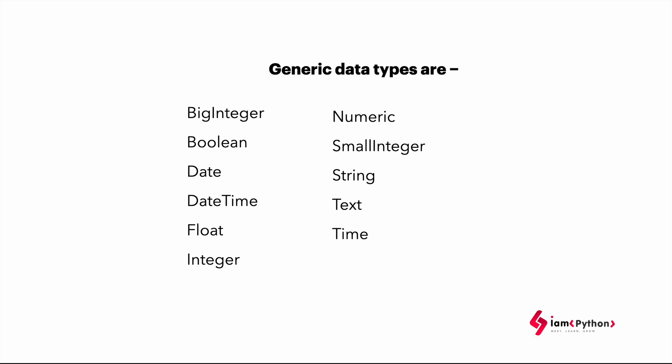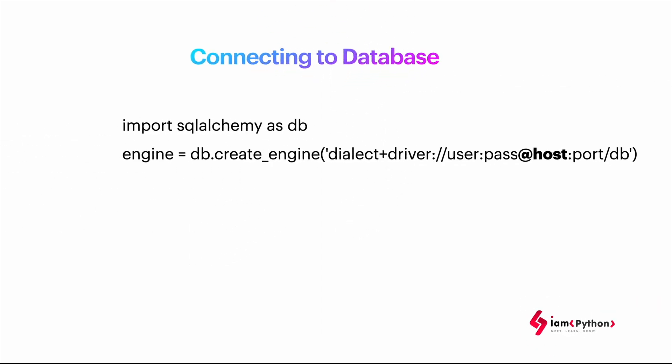SQLAlchemy also has various functions for table names and transactions specific to your database. Data types are very important: when writing Python code that interacts with database columns, you need to specify the right type — BigInteger, Numeric, SmallInteger depending on integer size, Boolean, Date, DateTime, Float, Integer, and so on. These data types are essential when your Python program interacts with particular columns in database tables.